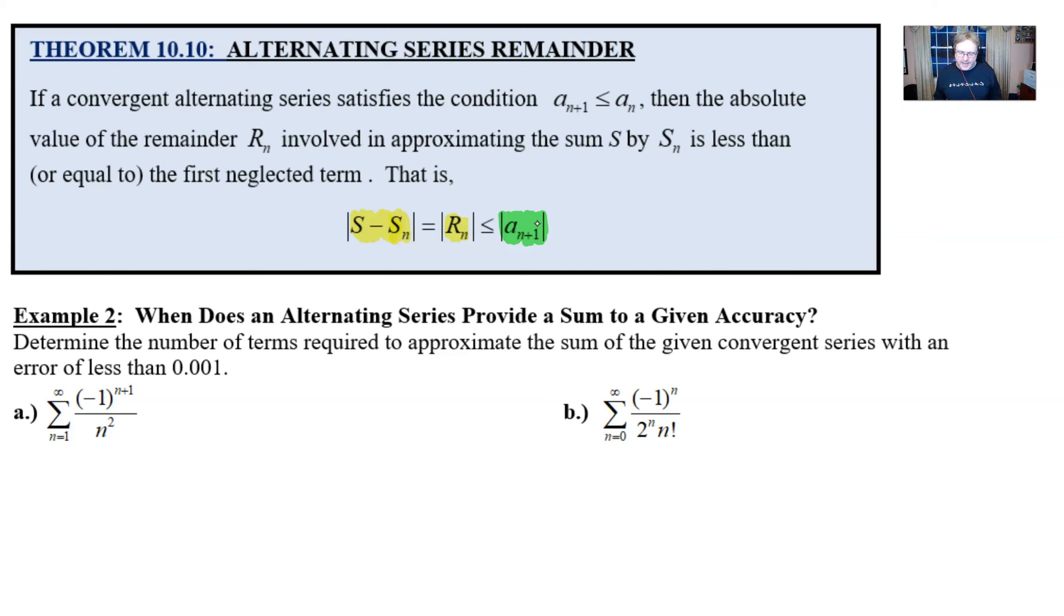We're going to use this to answer some of these questions that you see here in example two. Determine the number of terms required to approximate the sum of the given convergent series with an error less than 1 over a thousand, point zero zero one. That's important because you want to think of that decimal as being a fraction. Our part a looks like we have an alternating sort of p-type series in this particular instance.